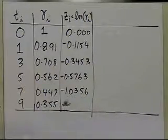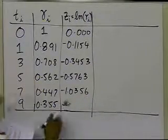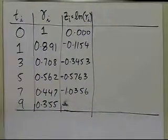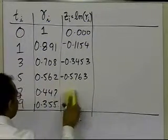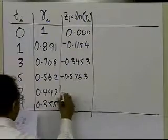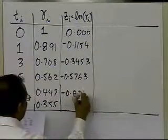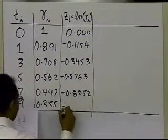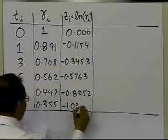I think I skipped a number here. It's minus 0.8052 and minus 1.0356.